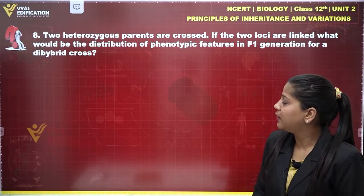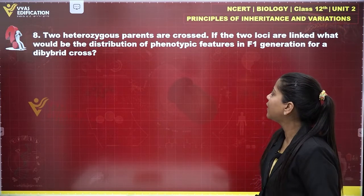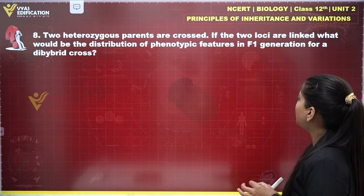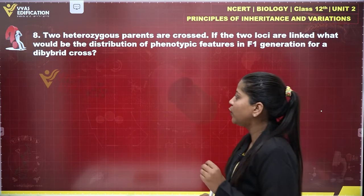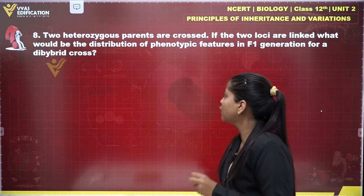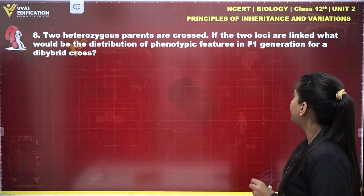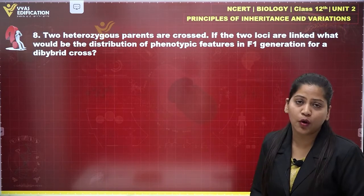Let's talk about question number eight. Two heterozygous parents are crossed. If the two loci are linked, what would be the distribution of phenotypic features in the F1 generation for a dihybrid cross?